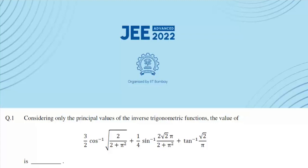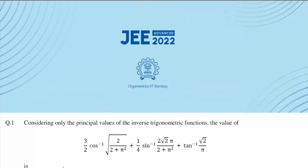Today we will discuss JEE Advanced 2022 Paper 1. The first question requires us to simplify an expression in principal values of inverse trigonometric functions.